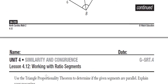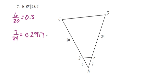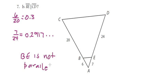Then we go to number 7 — we're trying to figure out whether these are proportional. When you did 6 over 20, you got 0.3. But when you did 7 over 24, you got 0.2917. So because the side lengths are not proportional, BE is not parallel to CD.